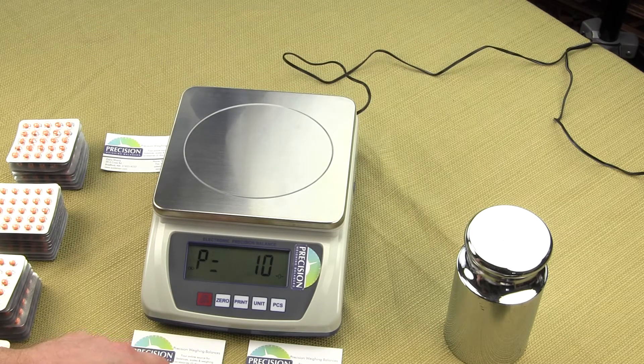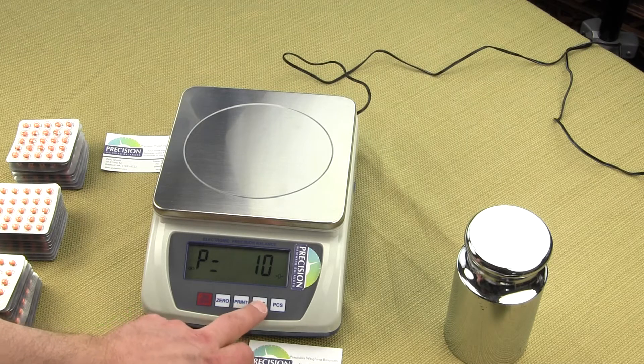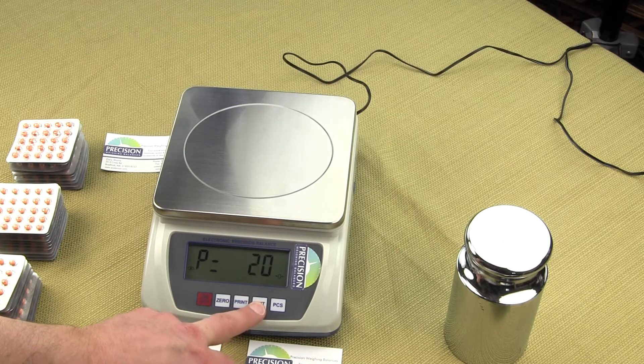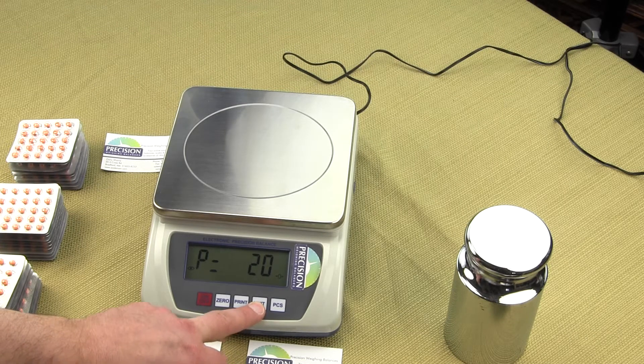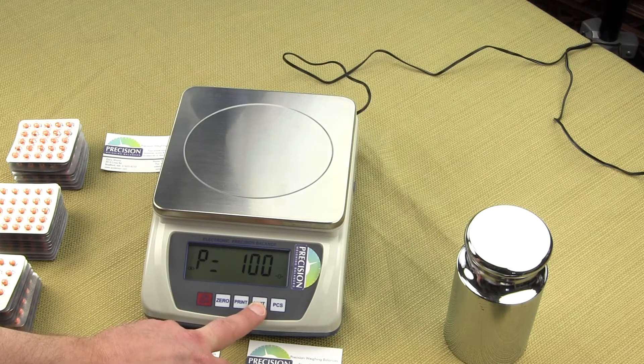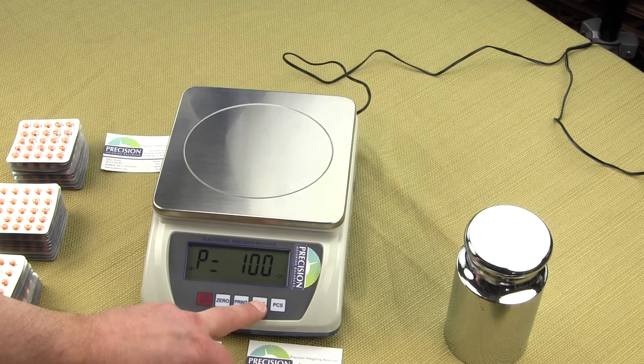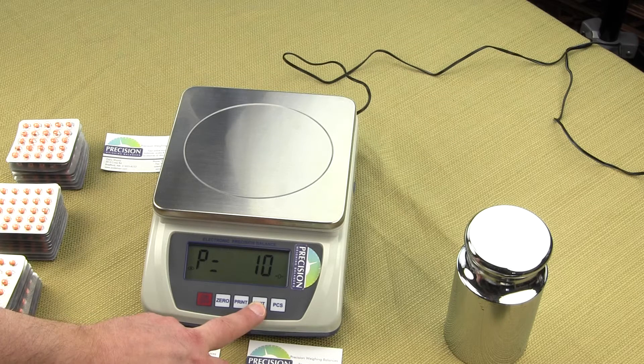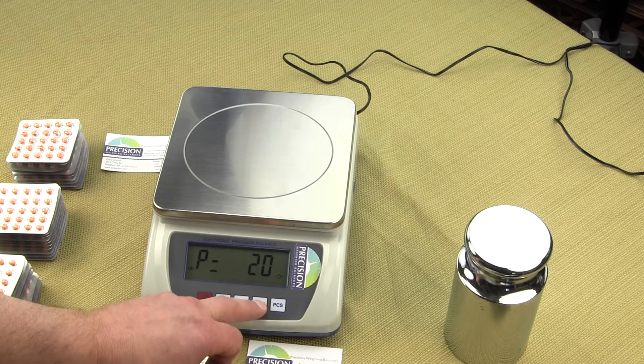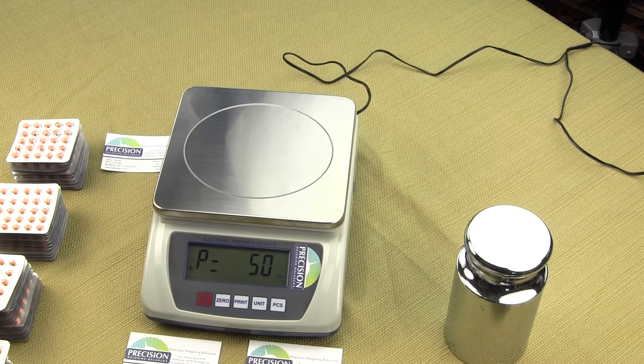To change the sample size, press the units key. When we press it, you'll see P equals 20, meaning 20 parts. P equals 50 means 50 parts. P equals 100 is 100 parts. If we press it again, we go back to P equals 10. So we want to select P equals 50.